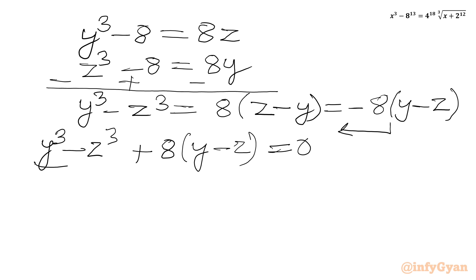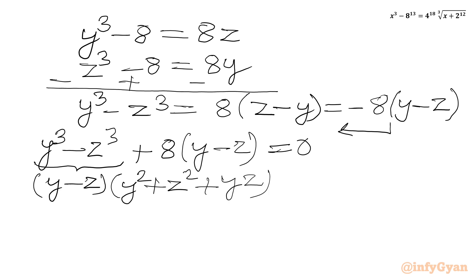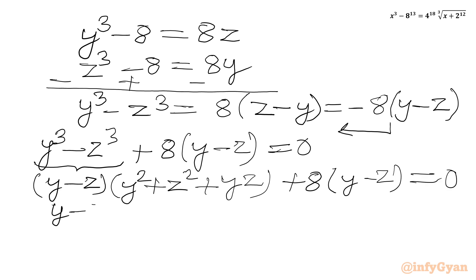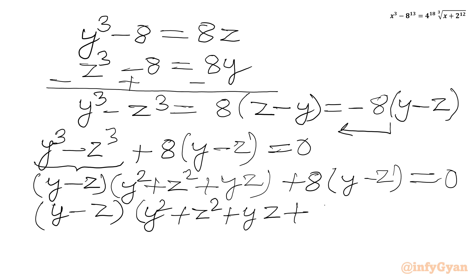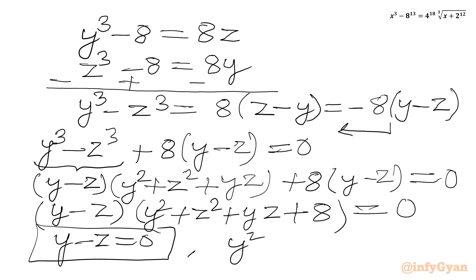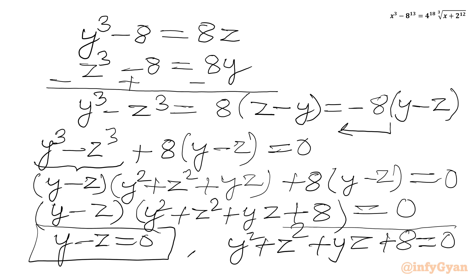Applying the difference of cubes formula a³ − b³ = (a−b)(a²+ab+b²), we get (y−z)(y² + z² + yz) + 8(y−z) = 0. Factoring out (y−z): (y−z)(y² + z² + yz + 8) = 0. So either y − z = 0, or y² + z² + yz + 8 = 0.